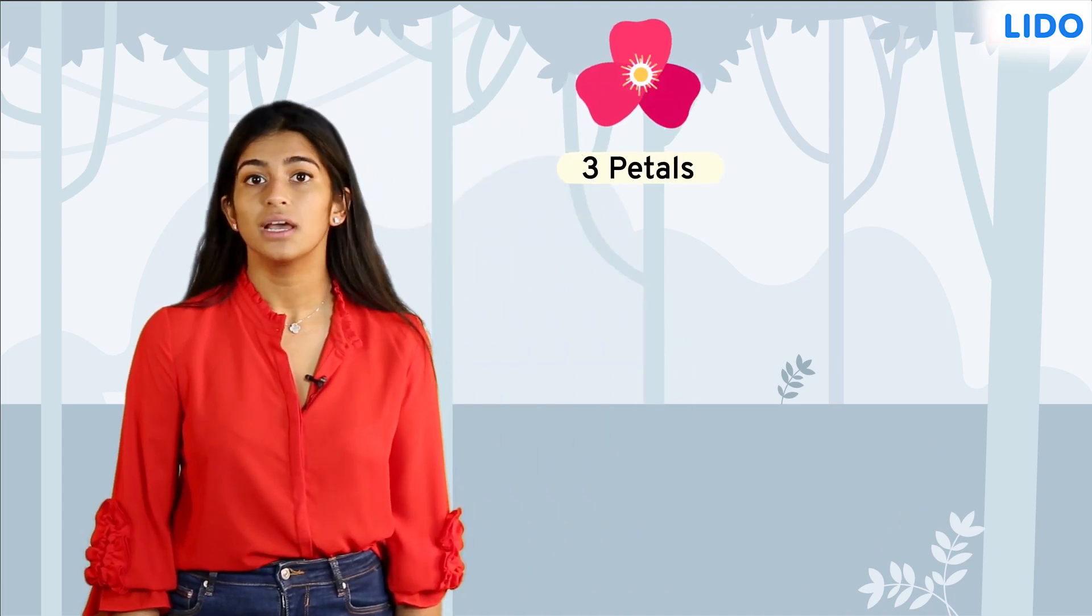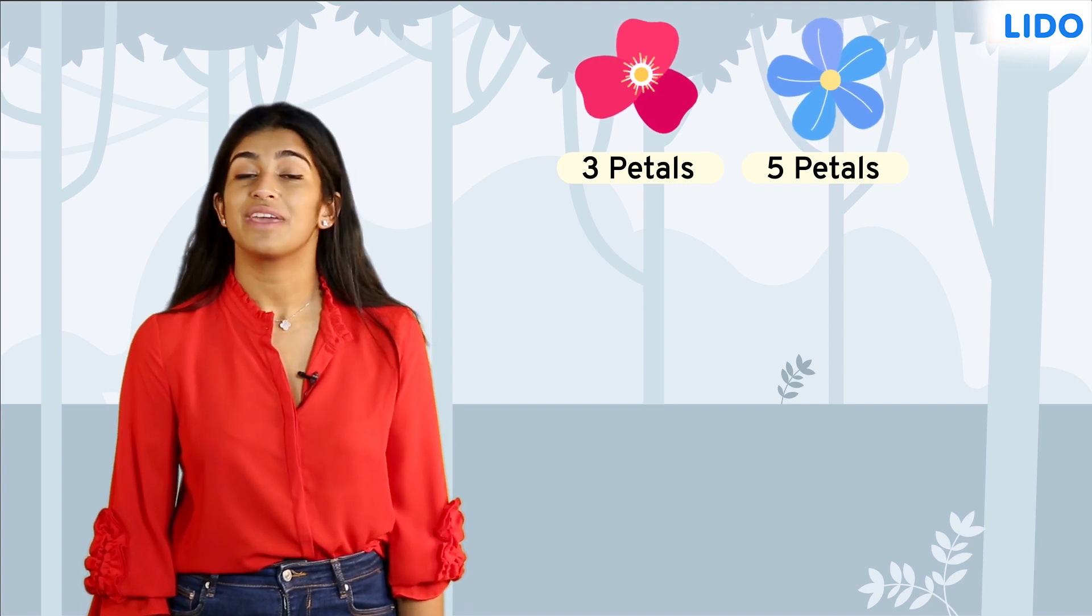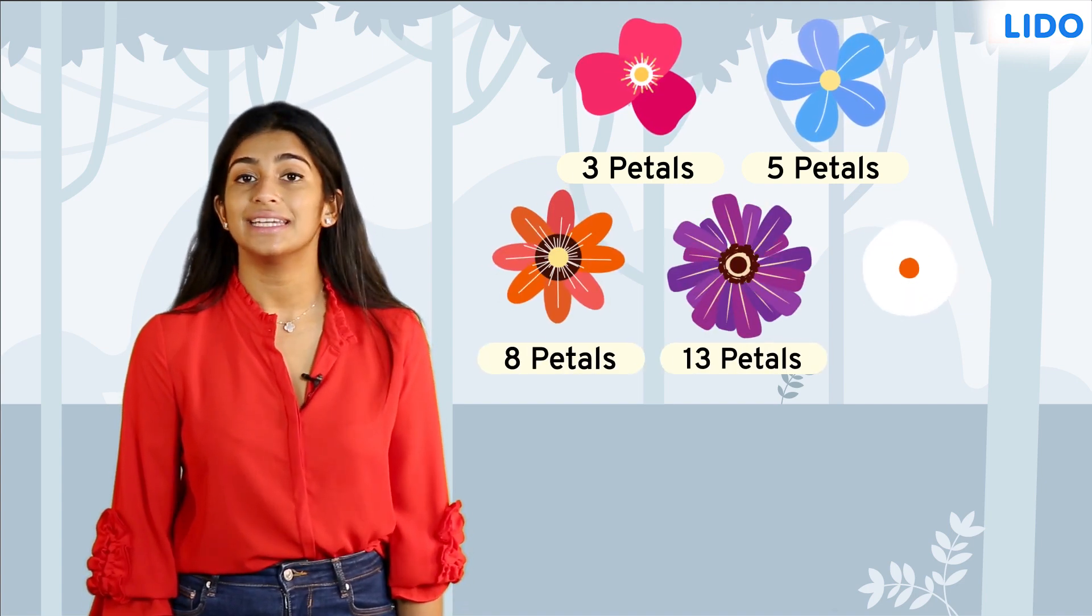But it turns out that some flowers have 3 petals, most have 5 petals, and if it isn't 3 or 5, then they seem to favor numbers like 8, 13, or 21.